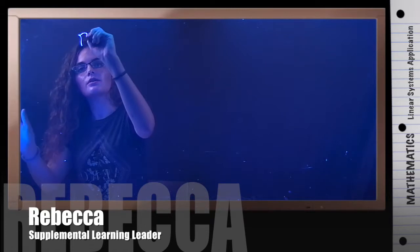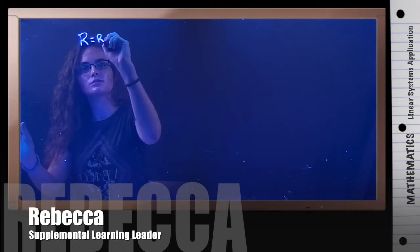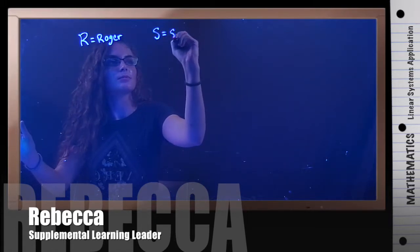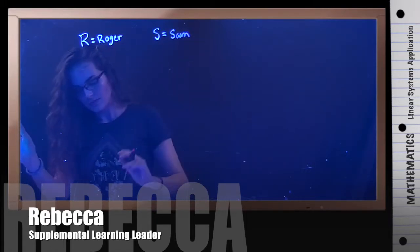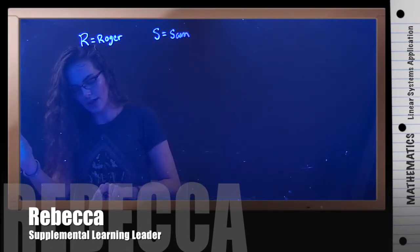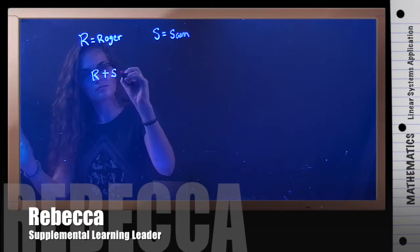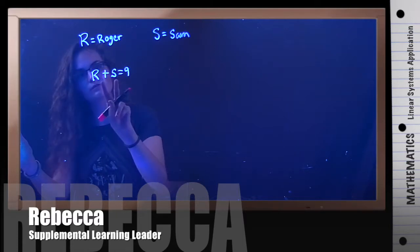So I'm going to say R is Roger and S is Sam. Now it says it takes Roger and Sam, so that means Roger, and always means plus, Sam 9 hours. So that means that combined, it takes them 9 hours. So that's our first equation.